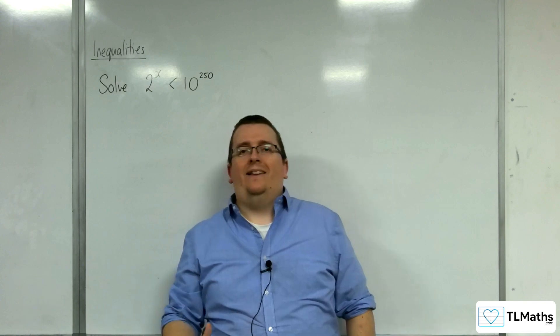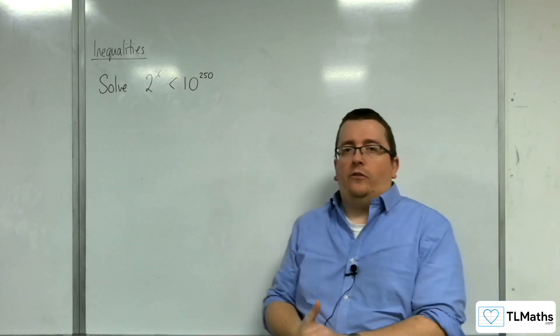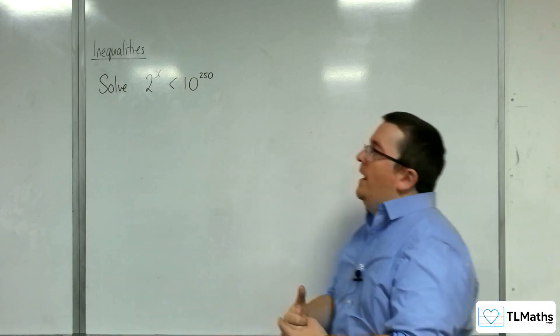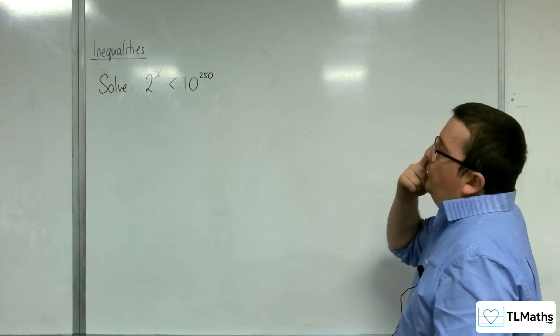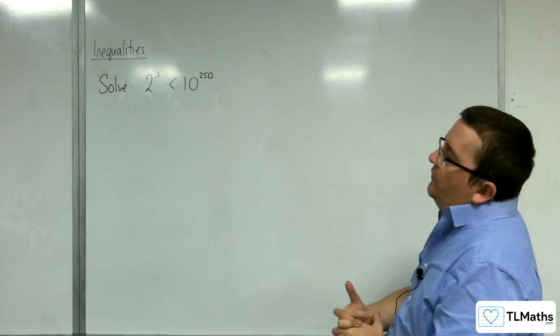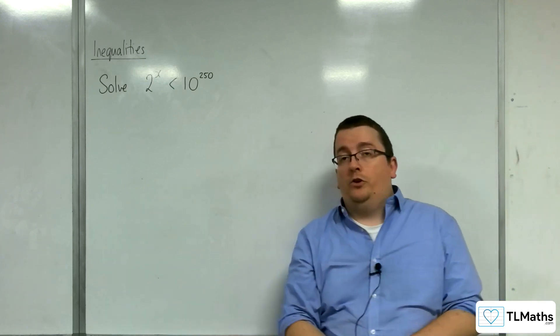Okay, so we're now going to take a look at some other inequalities that we can solve using the methods that we have. So let's take a look at this. We're going to solve 2^x < 10^250.